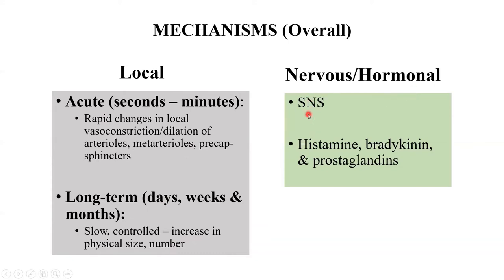There are also overarching nervous and hormonal mechanisms. The sympathetic nervous system vasoconstricts or dilates depending on the receptor - alpha-1 receptor causes vasoconstriction, beta causes vasodilation. Hormones such as histamine, bradykinin, and prostaglandins are also divided into vasoconstrictors and vasodilators, affecting tissue blood flow. However, local mechanisms take precedence when talking about various local tissues.